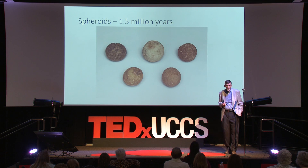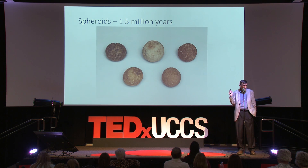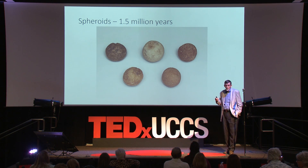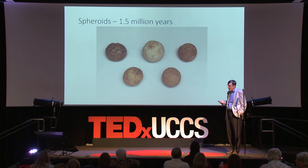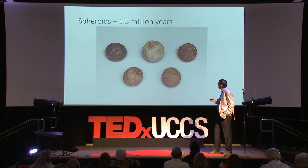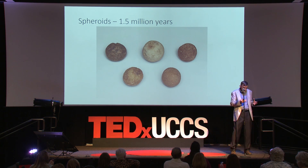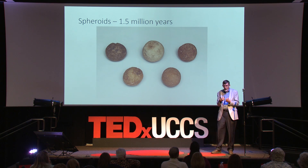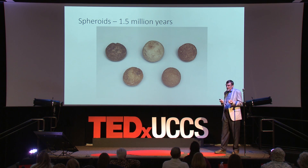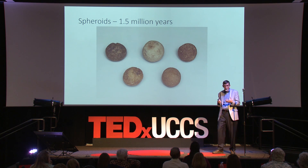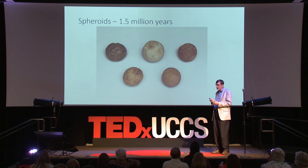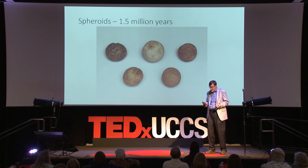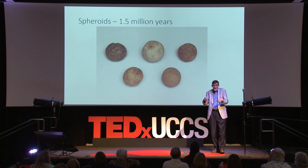Not only do we see bilateral symmetry, we see radial symmetry. These are made objects — cobbles of quartzite bashed repeatedly to get a round form. What we're seeing here is really the perceptual component of aesthetic experience. There are dedicated neural groups in your visual cortex for picking up symmetry, and when you see symmetry it fires off neurons in your pleasure cells. For the first time, hominins are imposing shape because it's pleasing to them.